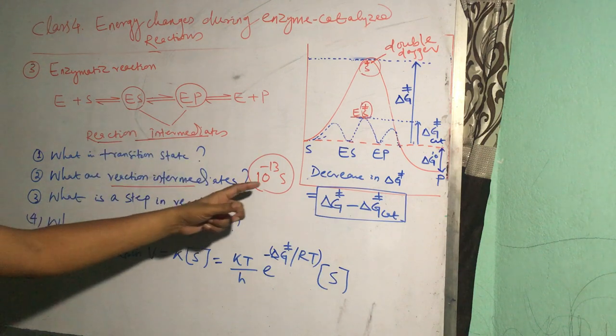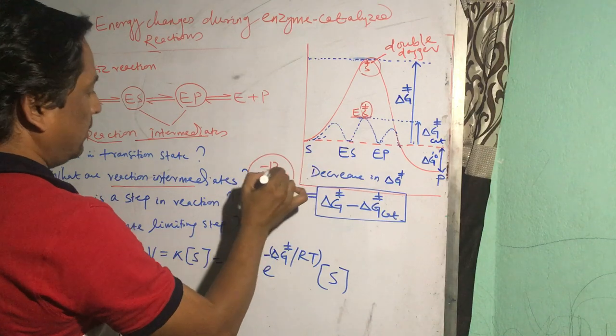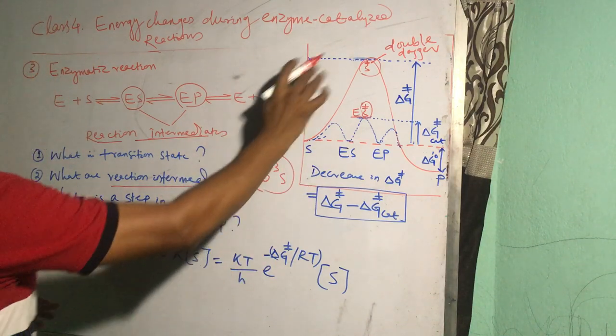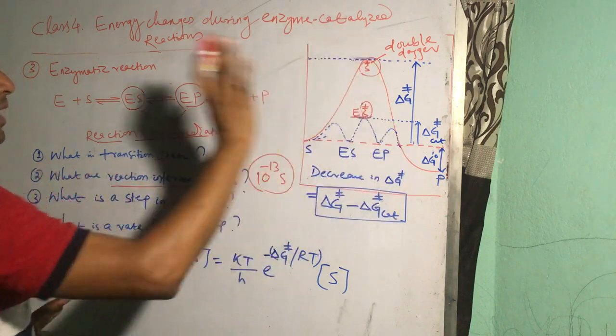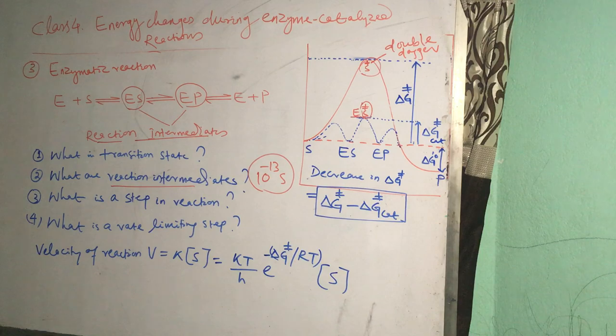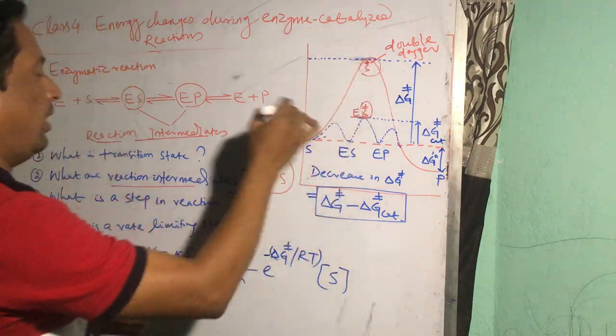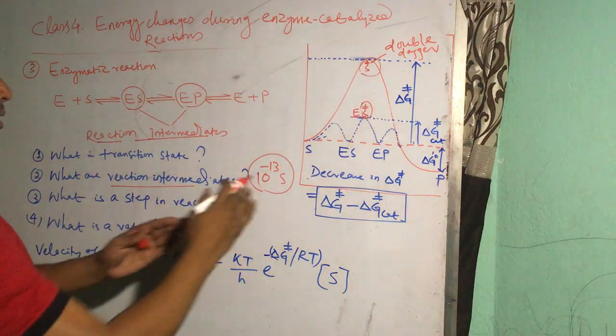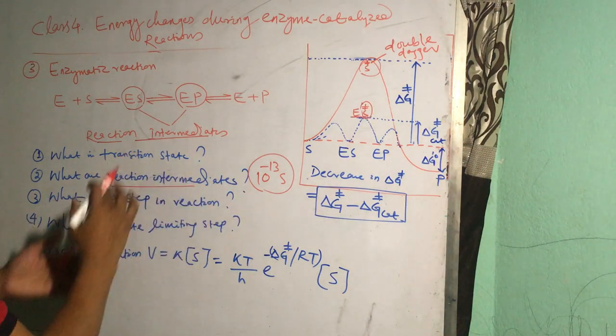So our transition state is less stable than this. It cannot be regarded as a reaction intermediate, but it is a fleeting state that is highly unstable and it determines the formation of product from substrate and vice versa.